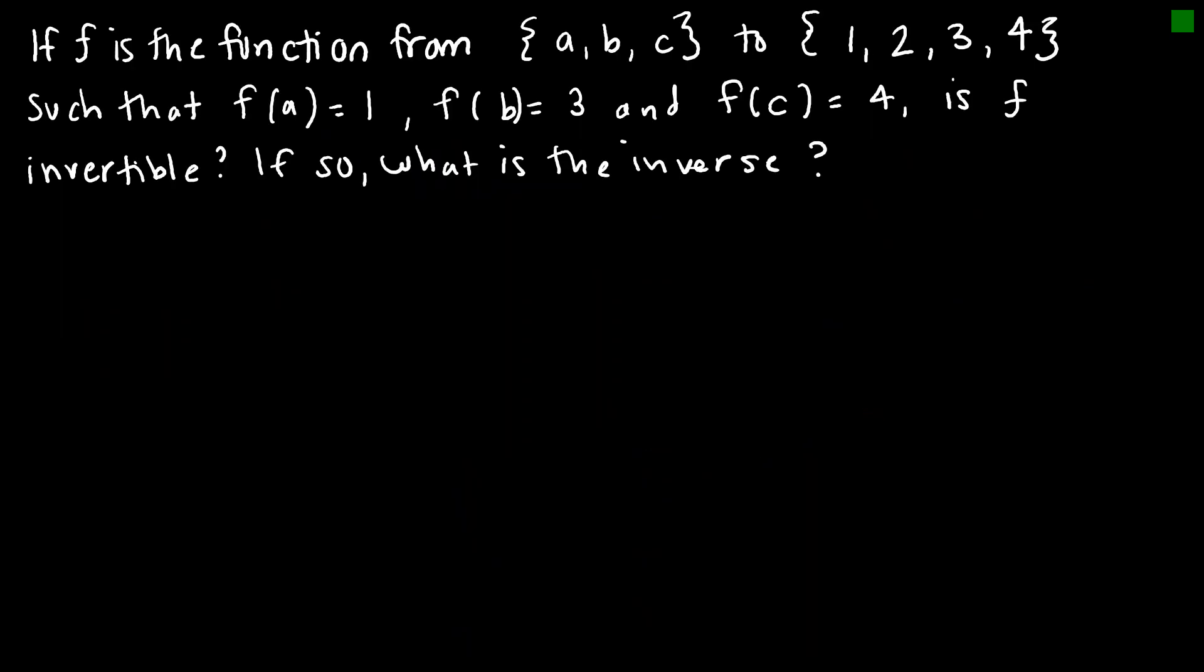So let's take a look at an example to see if this function, F, is invertible. And this function F is the function from A, B, C to 1, 2, 3, 4, such that F of A equals 1, F of B equals 3, F of C equals 4, and the question asks, is F invertible? And then if we answer yes to that, then we answer, what is the inverse?